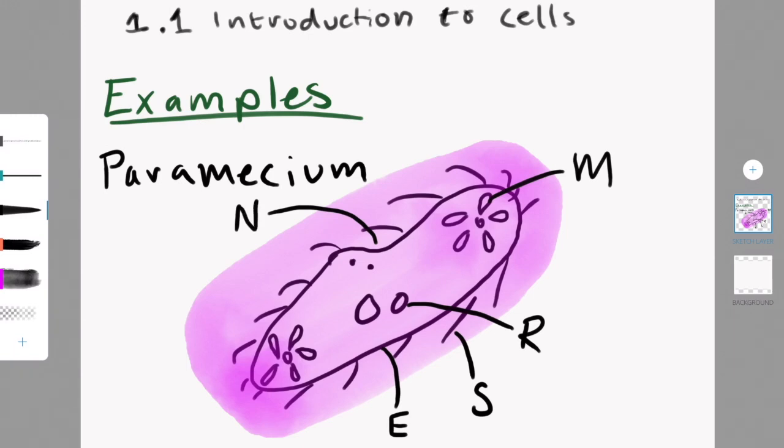For metabolism, this paramecium produces enzymes that start chemical reactions. Nutrition happens in the oral groove for feeding. Homeostasis happens because the contractile vacuoles pump out excess water. And the growth, it just grows in general.